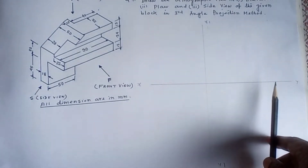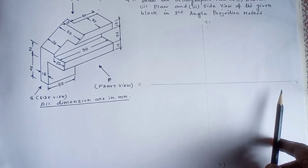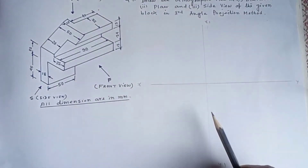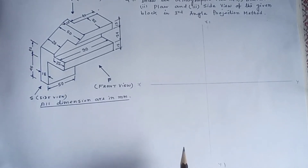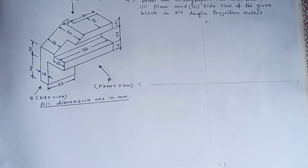We have a horizontal reference line. We have a reference line X-Y, and we have a perpendicular construction line. The X-Y axis is on top of the Y-axis. We have a vertical reference line with the X-axis and side view with a horizontal reference line.